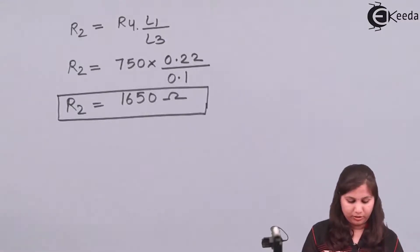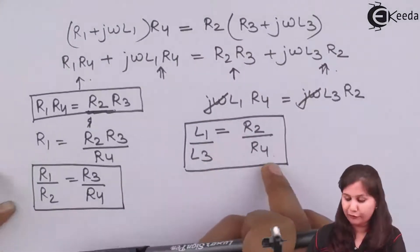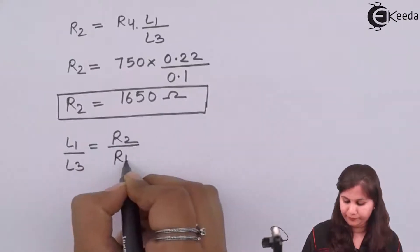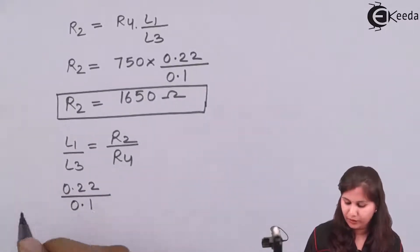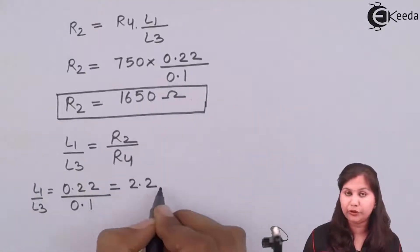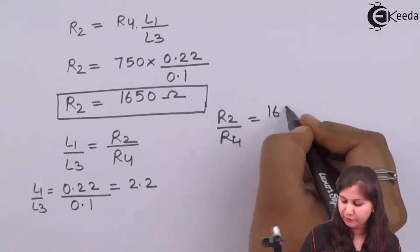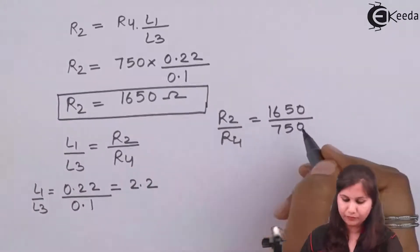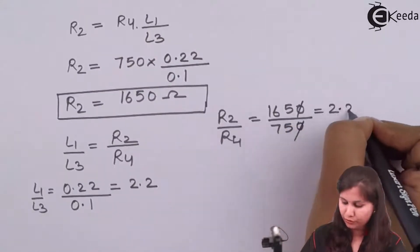Here we have obtained the ratio L1/L3 = R2/R4. L1 is 0.22 and L3 is 0.1, so this ratio comes to 2.2. Now R2 upon R4: R2 is 1650 and R4 is 750, so this ratio is also equal to 2.2. The inductance ratio is satisfied.